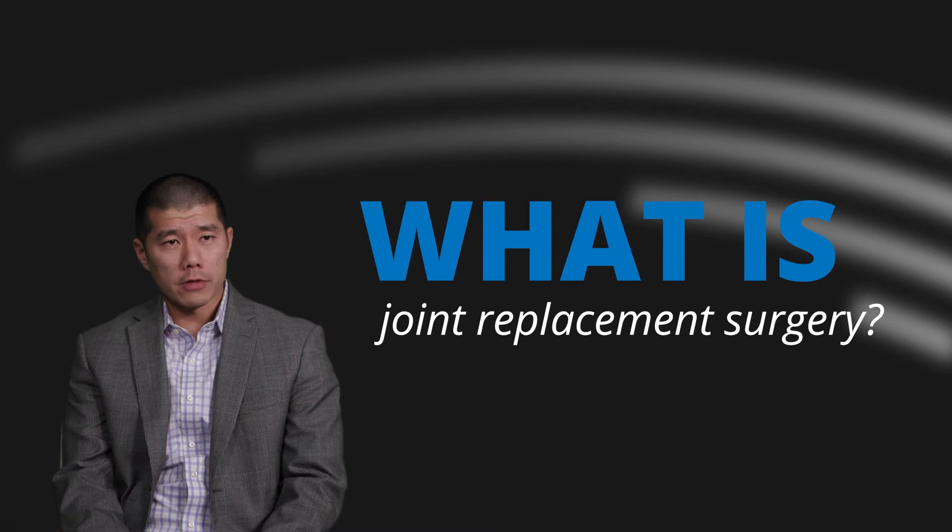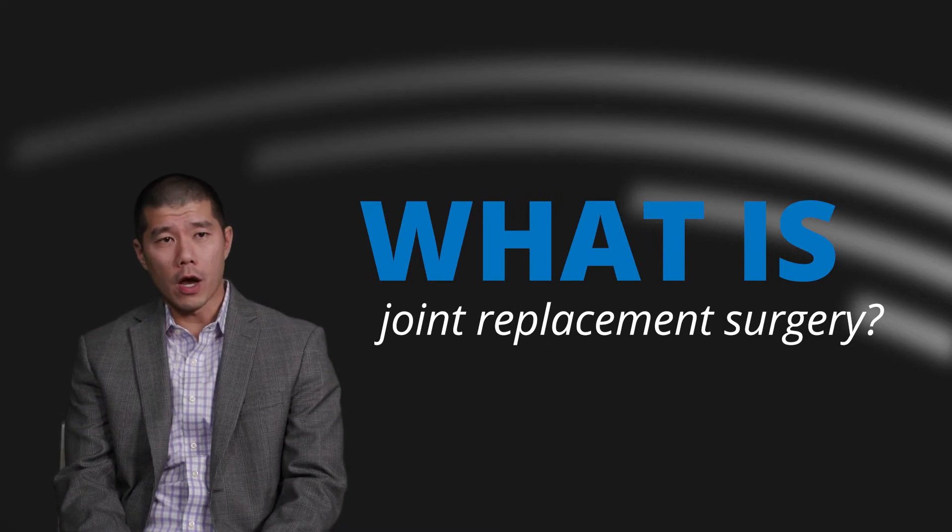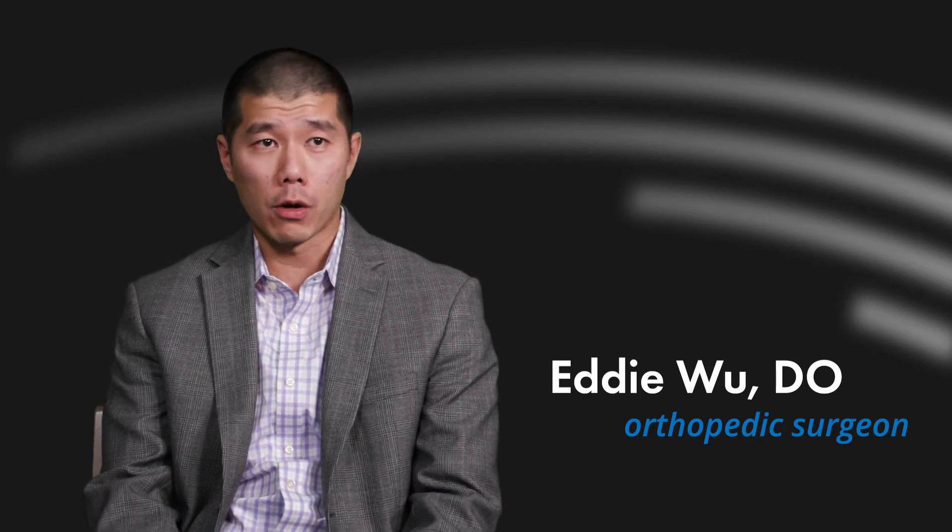Joint replacement surgery, in the simplest of terms, is where we open up the joint—whether it be the hip, the knee, the shoulder, the ankle, whatever joint we're discussing. The diseased portions of the joint, which are worn away and where the cartilage has eroded away, are removed. Basically, the eroded parts get replaced with either metal and/or plastic or a combination thereof.